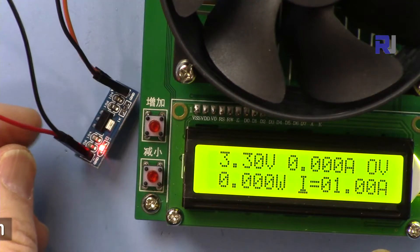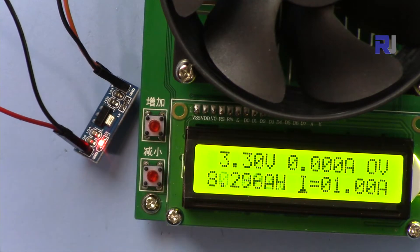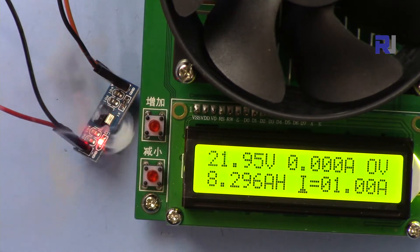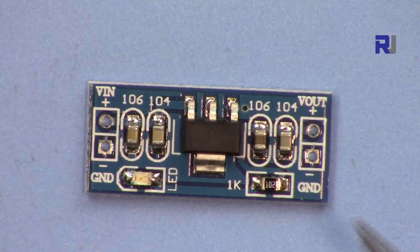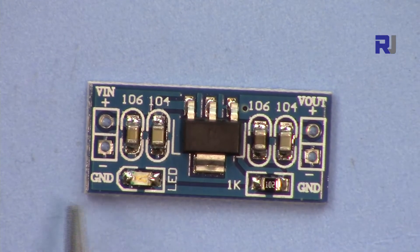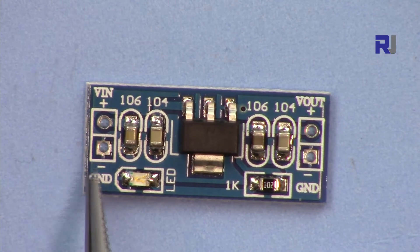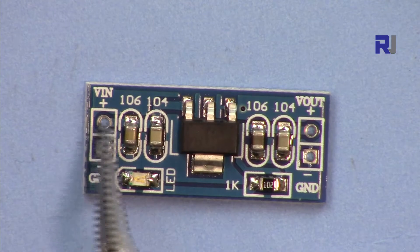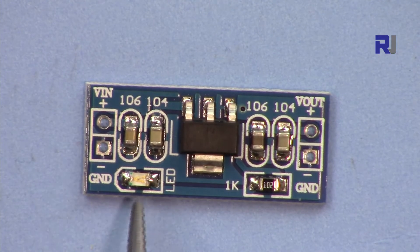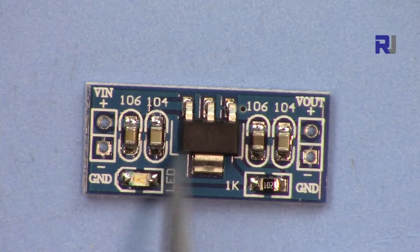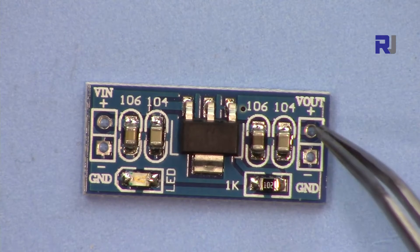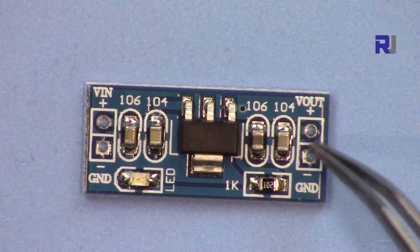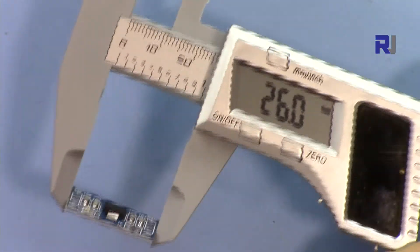So this is the module. As you can see here we have two inputs VIN and ground, and positive that you connect. There is an LED for the power, this is the actual regulator, and these two terminals are for the output. The length of it is 26 millimeters, the width is 11.2 millimeters, and the thickness is 2.8 millimeters.